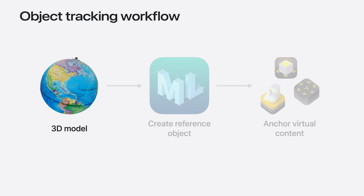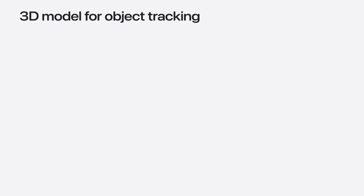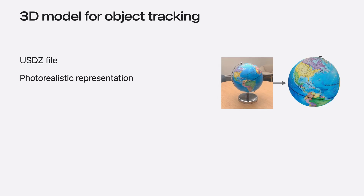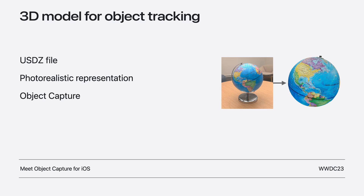The CreateML app requires a 3D asset to train a machine learning model for your object. Your 3D asset needs to be in the USDZ file format, and to ensure best tracking quality, your asset should be as photorealistic as possible — essentially a digital twin of your real-world object. A simple way to obtain a photorealistic 3D model is by using our object capture technology with an iPhone or iPad. For objects with glossy or transparent parts, you may also provide a multi-material asset from any other acquisition workflow.